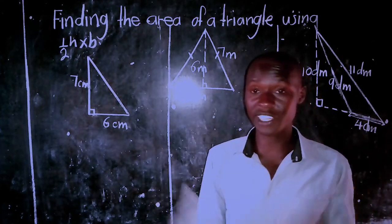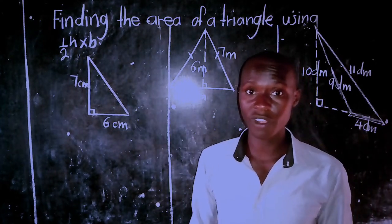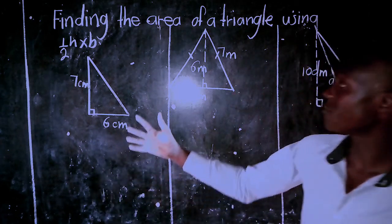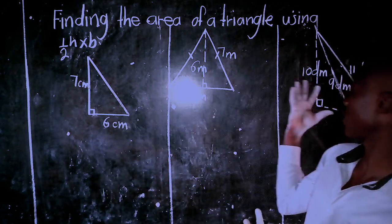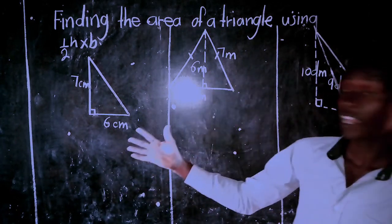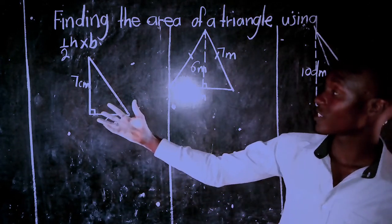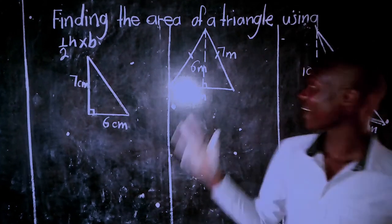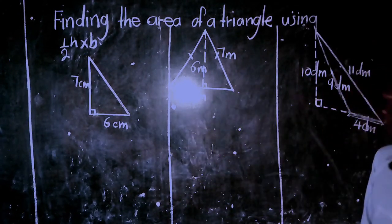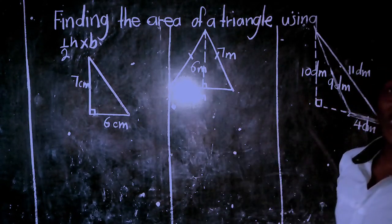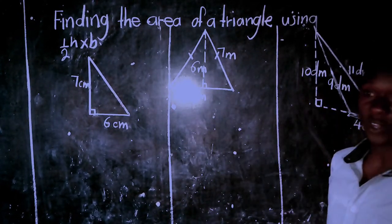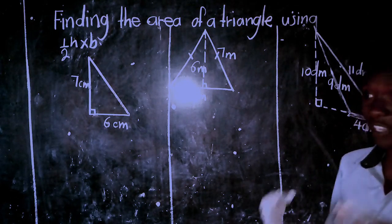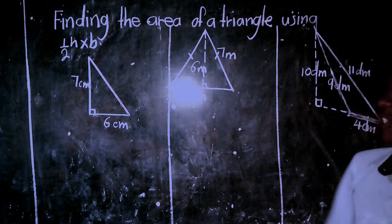We have different kinds of triangles. For example, I have three kinds of triangles here. I have a right triangle, I have an isosceles triangle, and this is an obtuse triangle.